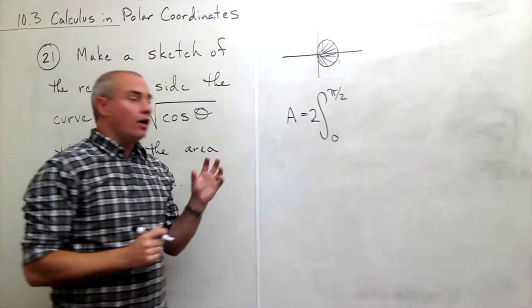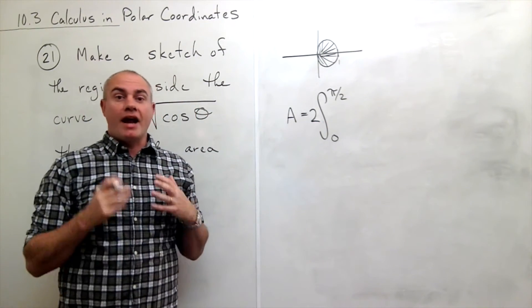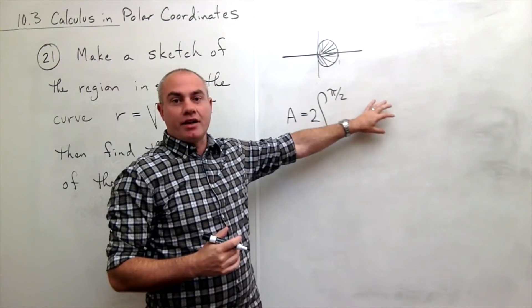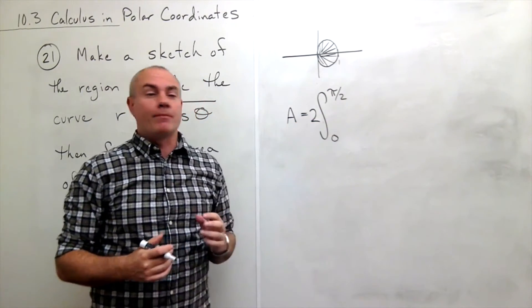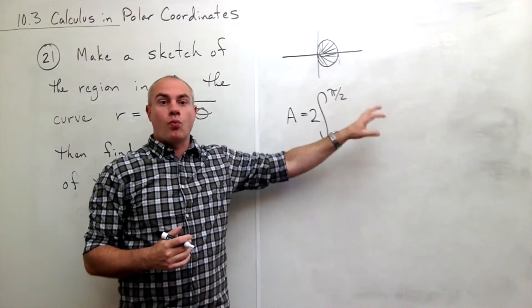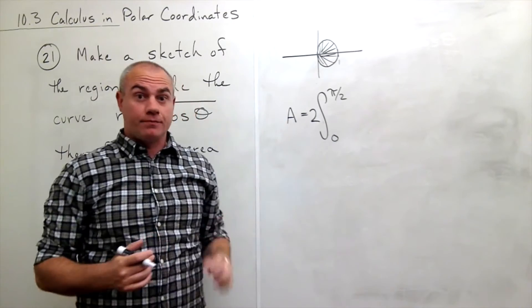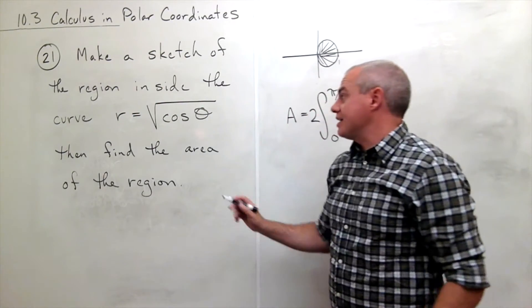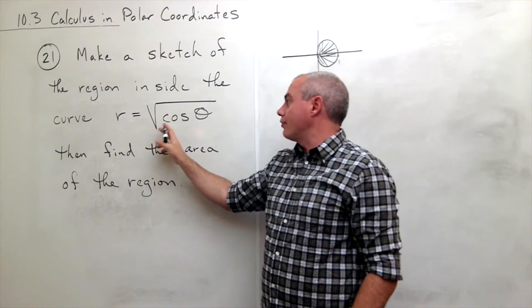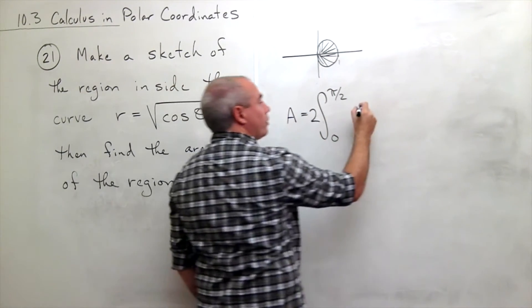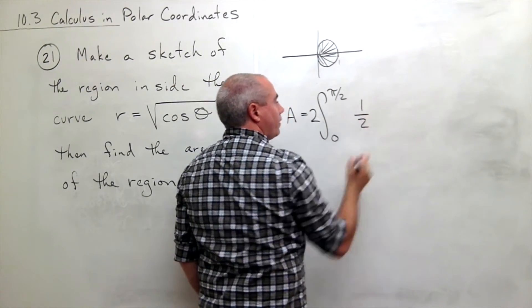And then what goes inside? Well, when I'm integrating area in polar, I don't just throw the function in there and I'm done. I have to remember what I put inside is one half of r squared. Now in this case, r is the square root of cosine theta, so what I want to put inside my integral is one half of